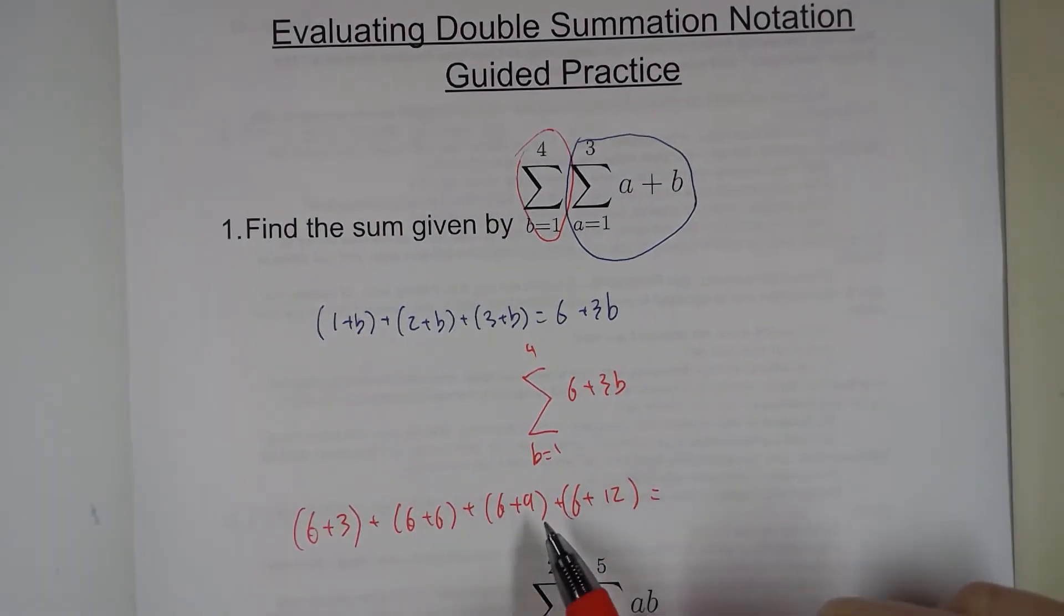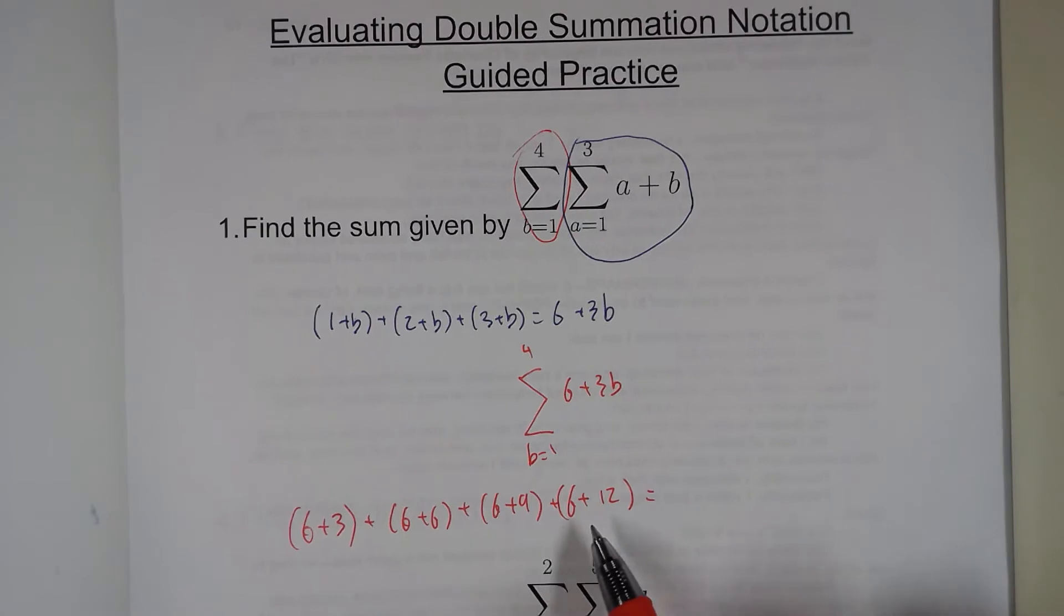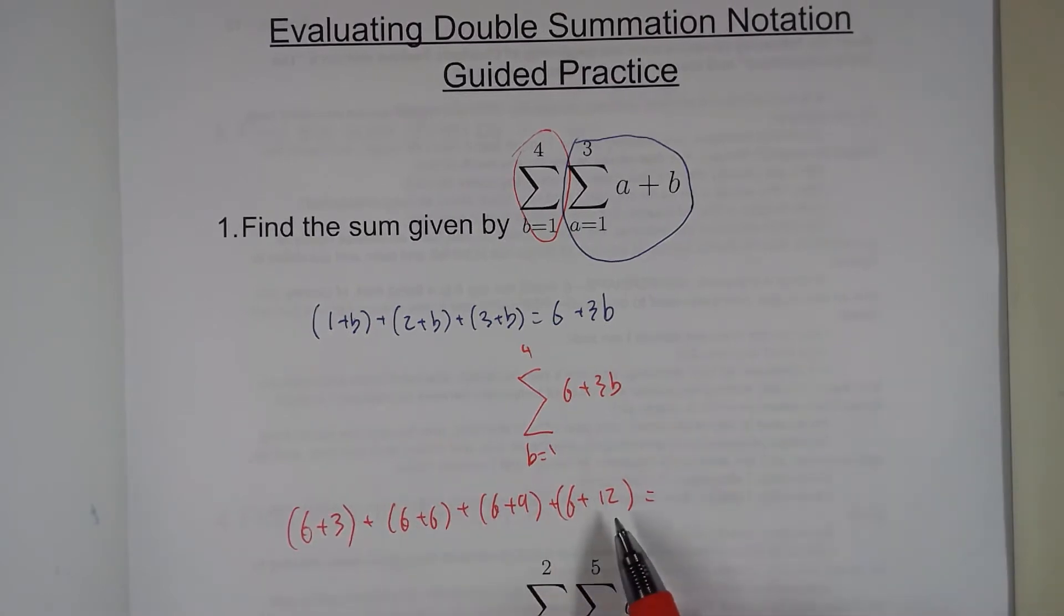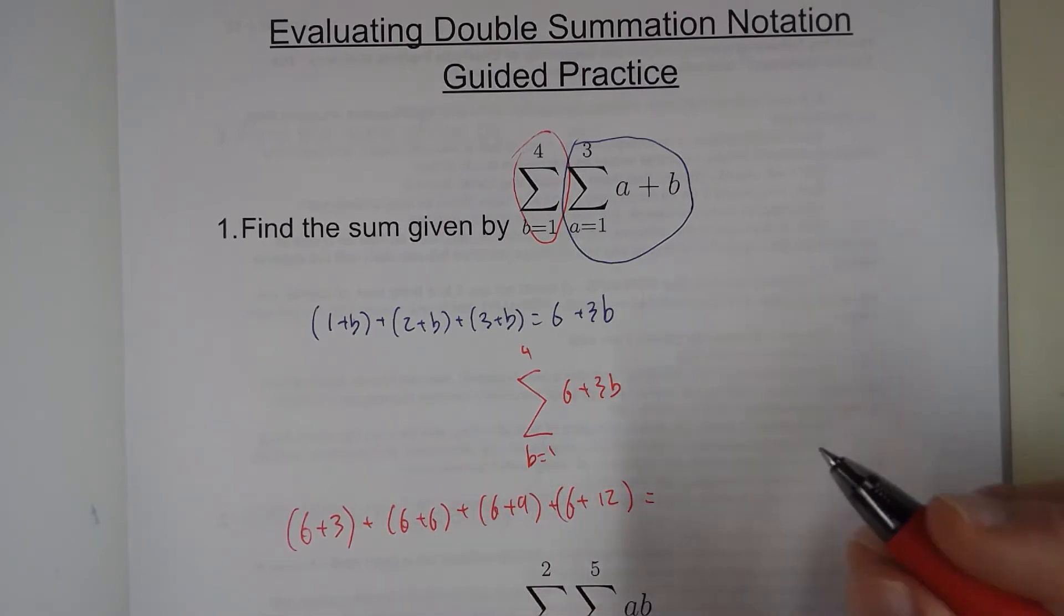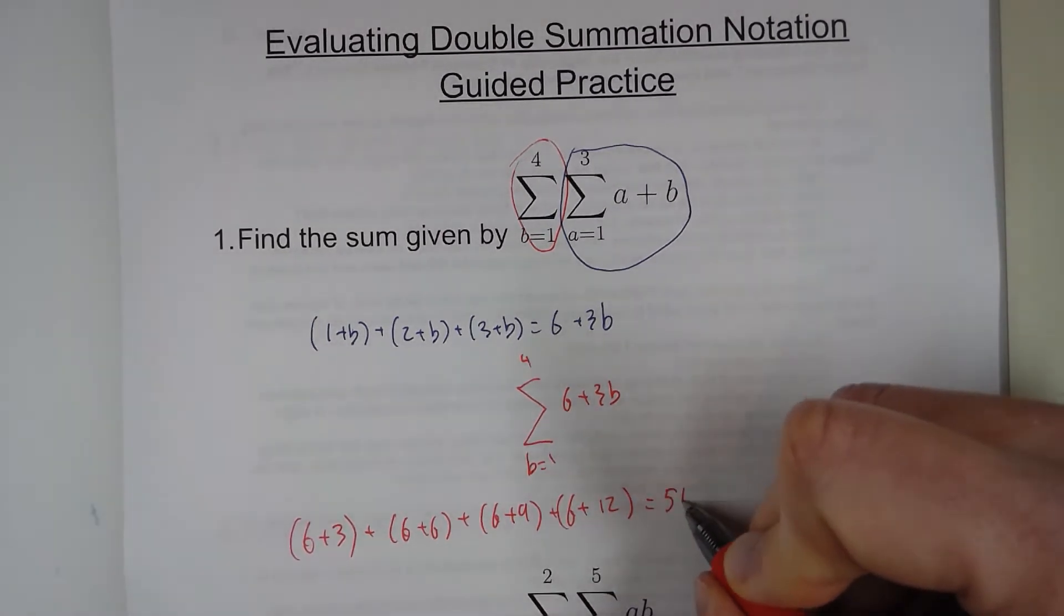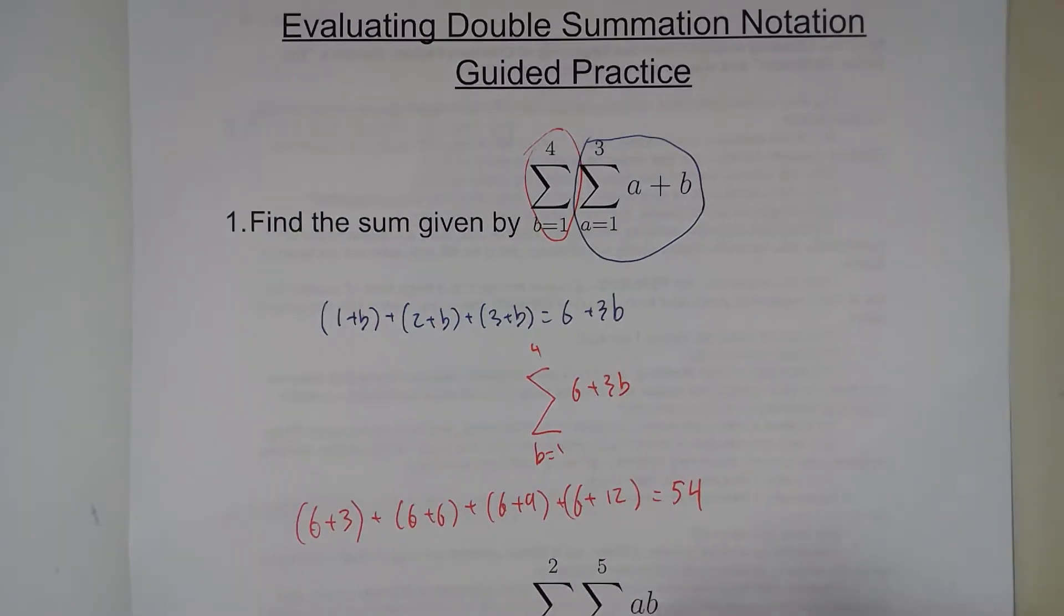And so 6 plus 6 plus 6 plus 6 is 24. 3 and 12 is 15, 6 and 9 is 15. So if I add that, we get 30 plus the 24 gives us 54. And so that is what this double summation notation equals.